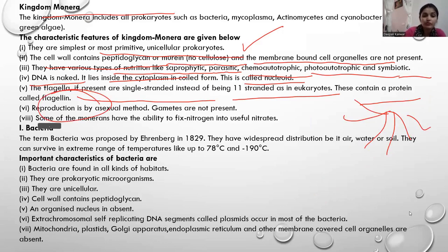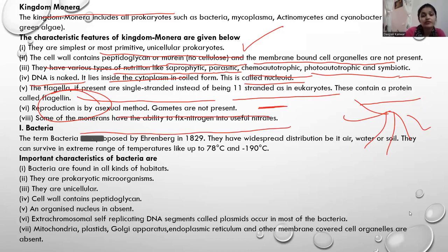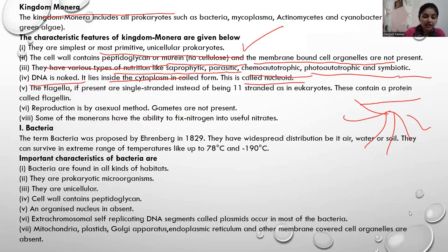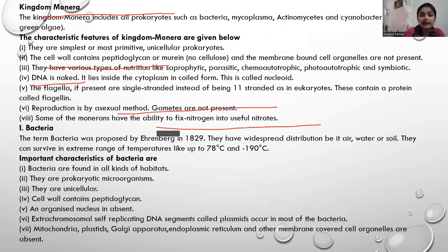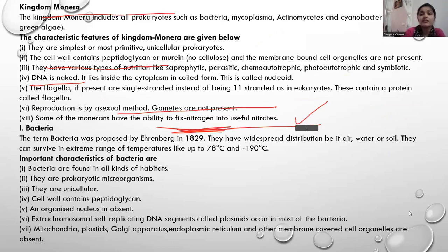Flagella are also present, primarily for locomotion — for movement. Reproduction occurs by asexual method; gametes are not present. Some of the monarians have the ability to fix nitrogen, as plants cannot absorb nitrogen directly from the atmosphere, so they take the help of bacteria like Rhizobium to fix nitrogen into nitrates from which they can derive nourishment.